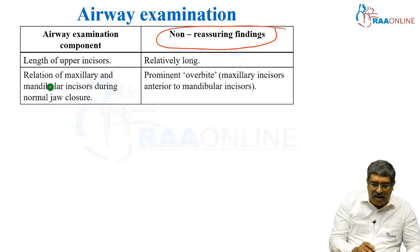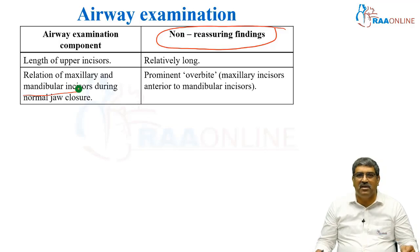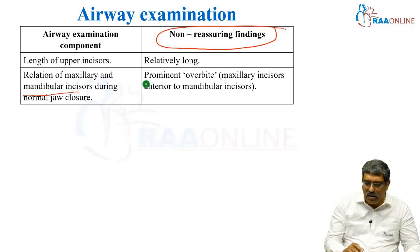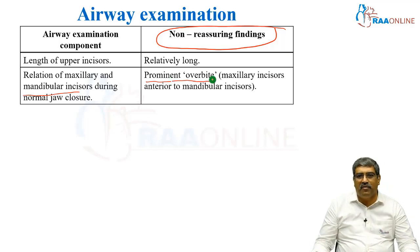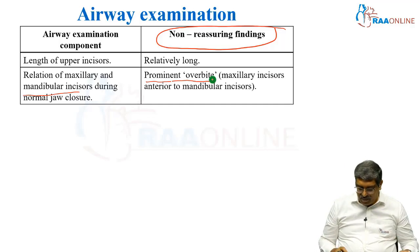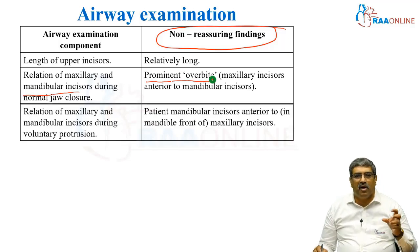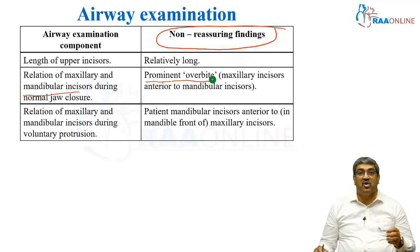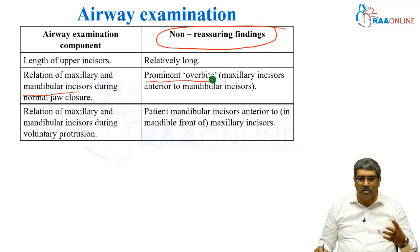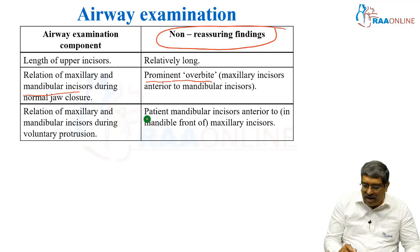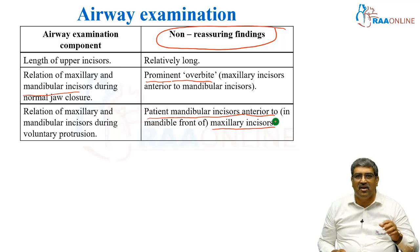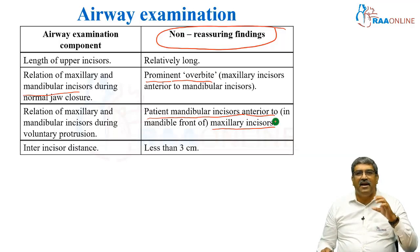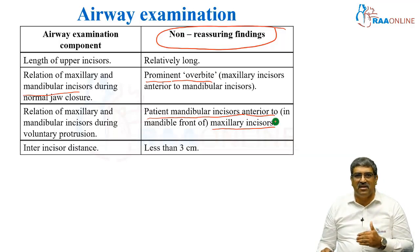Relation of the maxillary and the mandibular incisor during normal jaw closure — a non-reassuring finding is a prominent overbite where the maxillary incisor is anterior to the mandibular incisor. Relationship of maxillary and mandibular incisor during voluntary protrusion — where the mandibular incisor cannot be brought anterior to the maxillary incisor is a non-reassuring finding. Inter-incisor distance — if it is less than 3, it is bad.